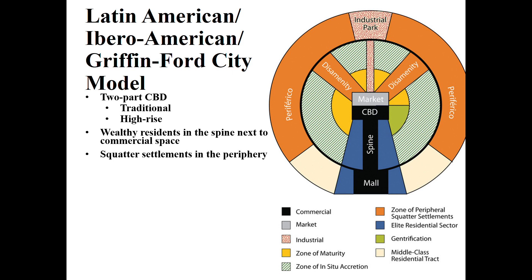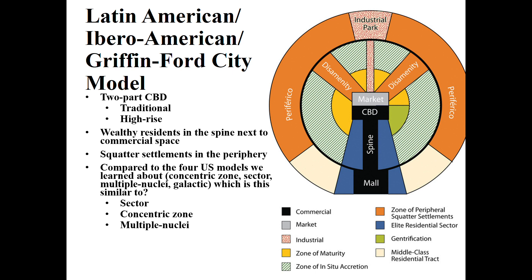When you compare this Latin American model to the four U.S. models — the concentric zone, sector model, multiple nuclei model, and galactic city model — which is it most similar to? You can probably see some similarities to the sector model, the one that's kind of like pie slices coming out from the center. We've also got some obvious circles within circles, like the concentric zone model. And we've also got a little bit of the multiple nuclei model with the edge city here.